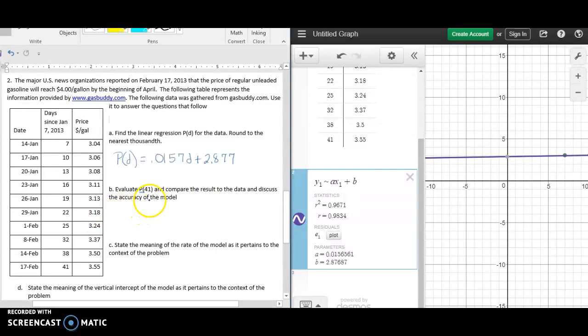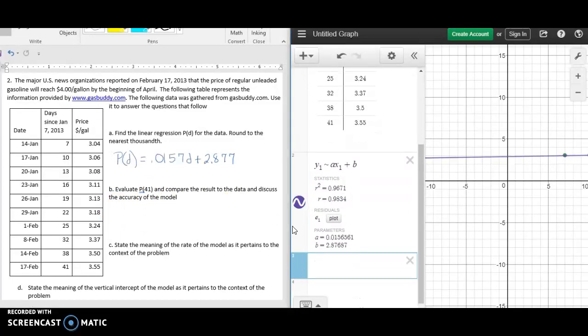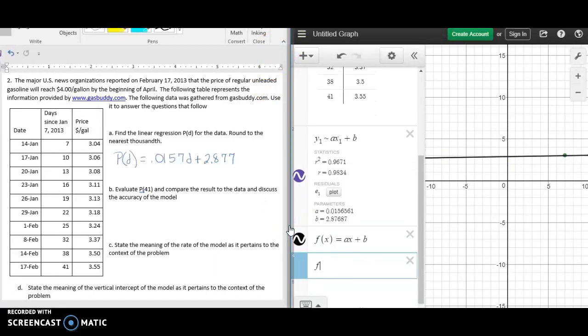Now we want to evaluate p of 41. We want to go back to Desmos and make this a function now, so we want f of x equals ax plus b. It's using the parameters of a and b to state that.